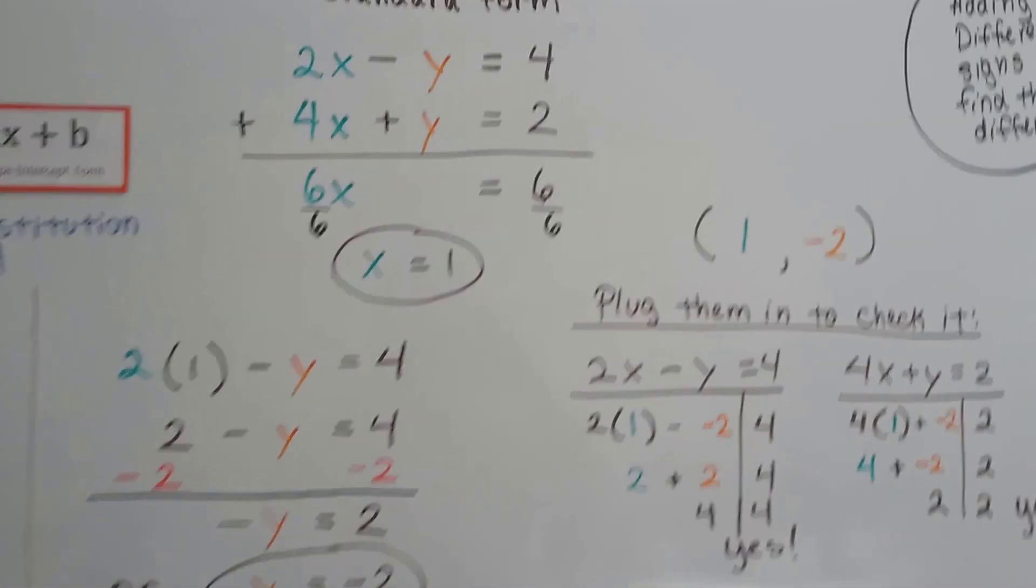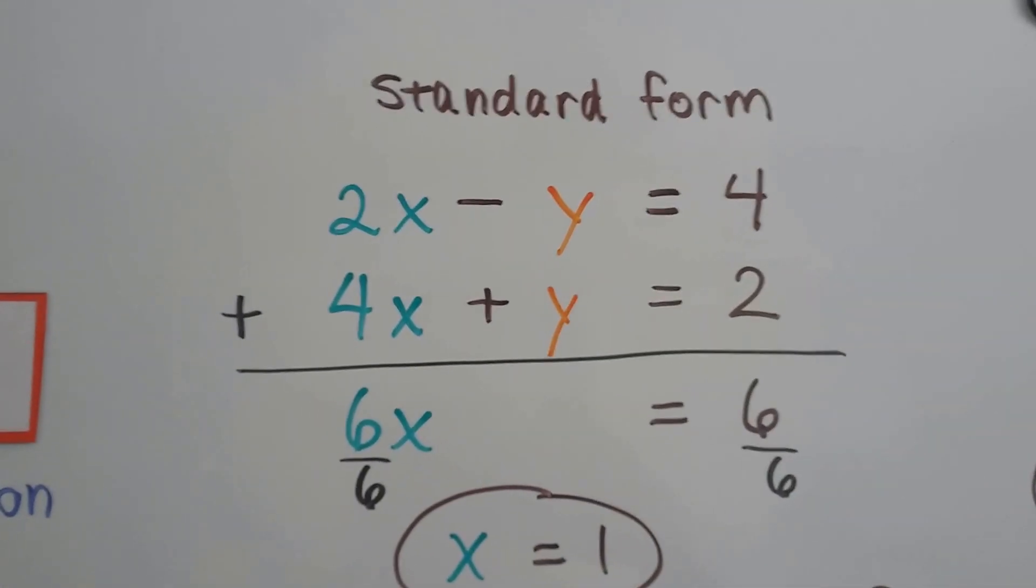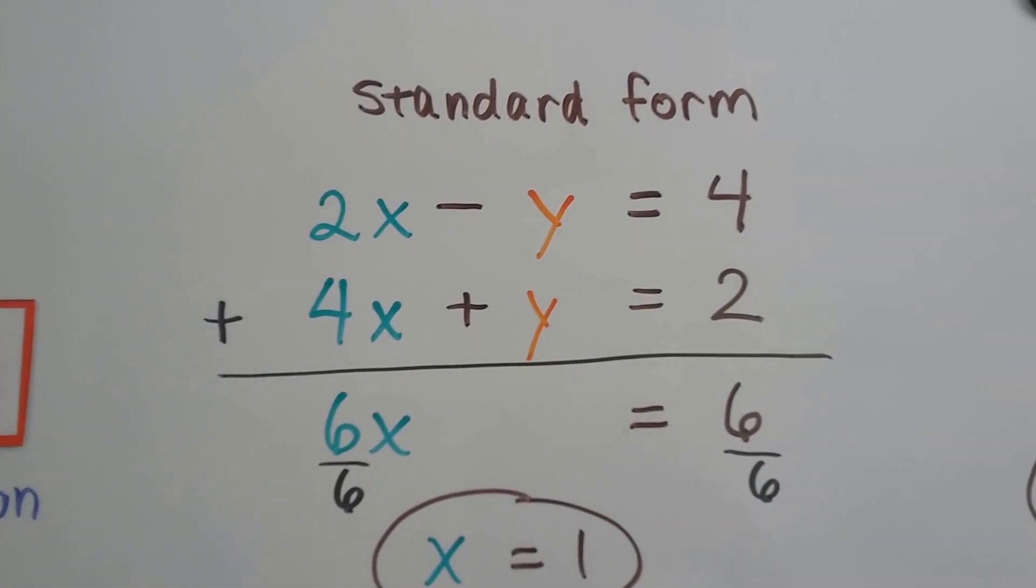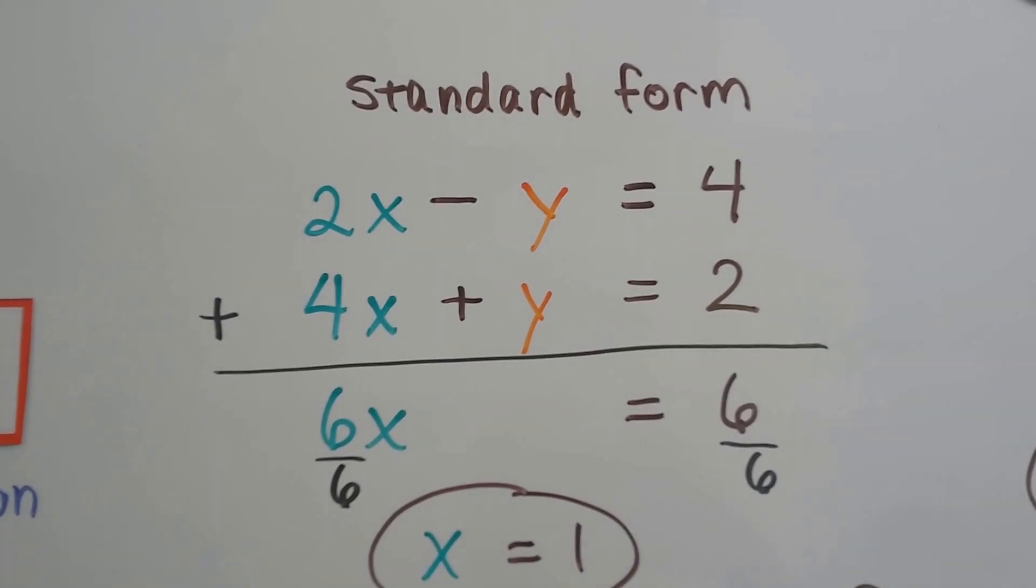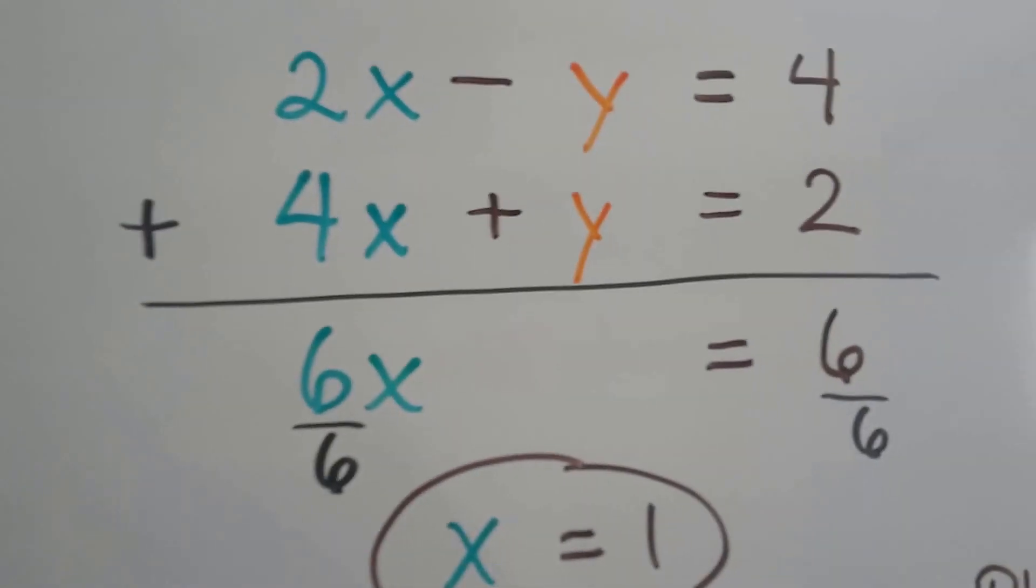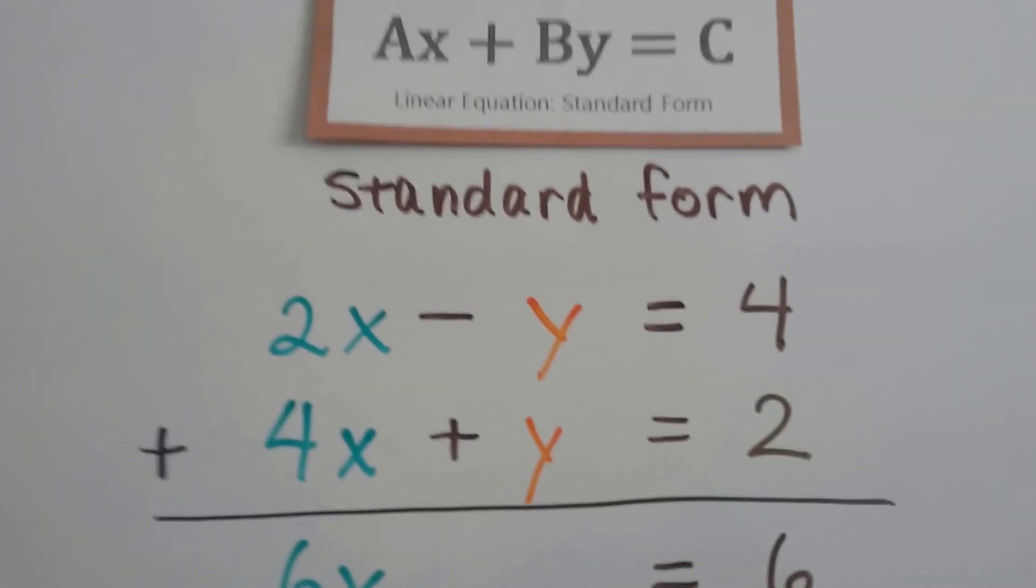Here's another one. We've got 2x - y = 4 and 4x + y = 2. Now these are written in standard form, we can see that. Standard form.